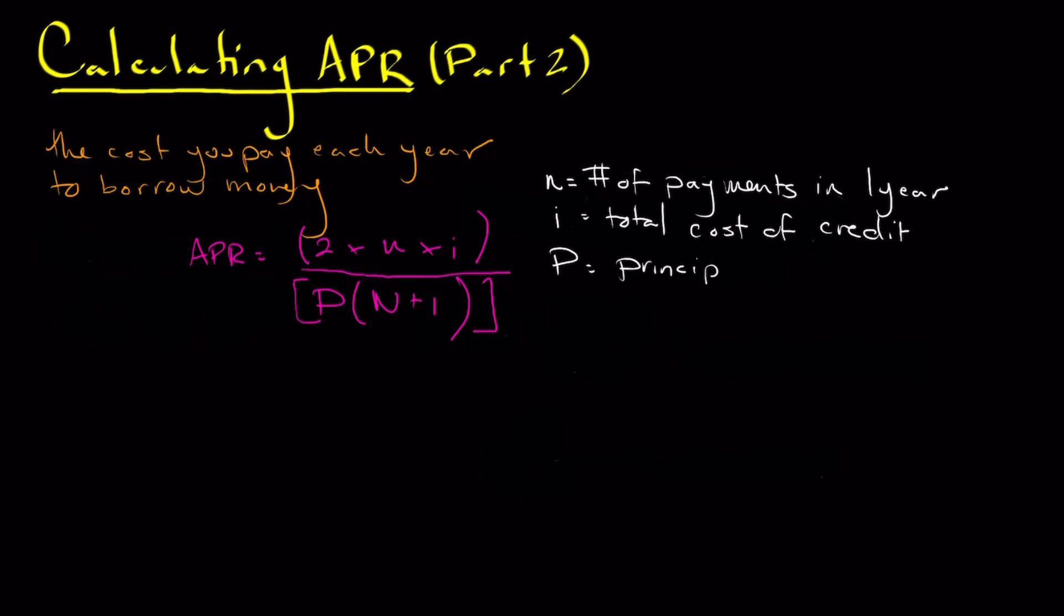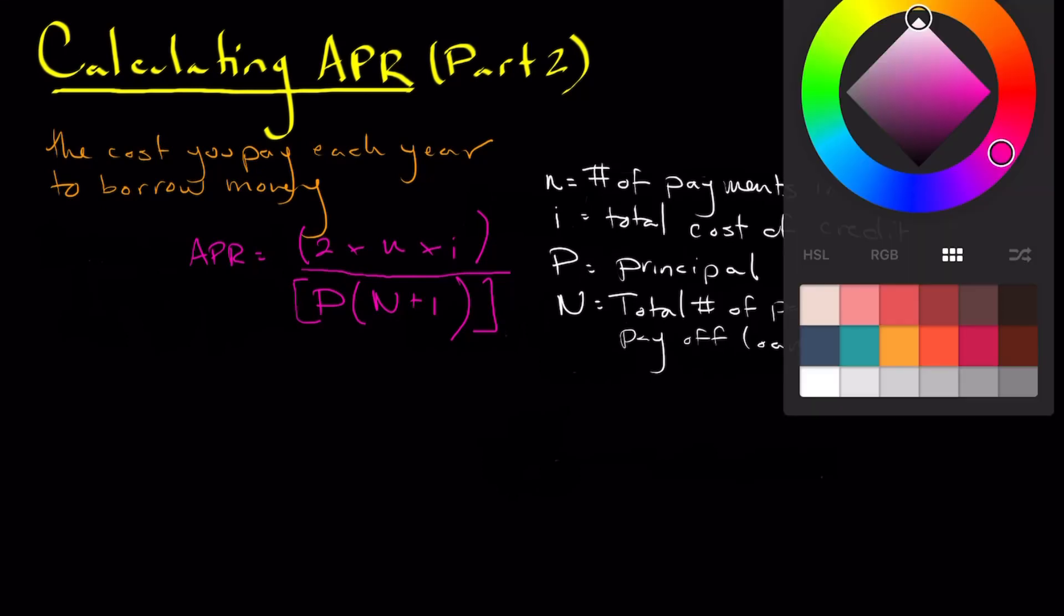P in this formula is going to be our principle. So that's the amount that we're going to borrow. Big N is going to be the total number of payments to actually pay off the loan. So, for example, if you were getting a vehicle loan and you were going for a four year loan, the number of payments that you would have to pay off the loan would be 48 since you're paying one every single month for four years. And that's it.